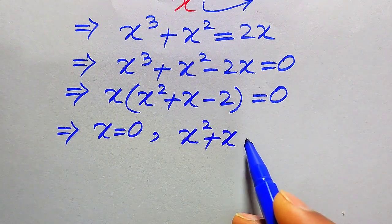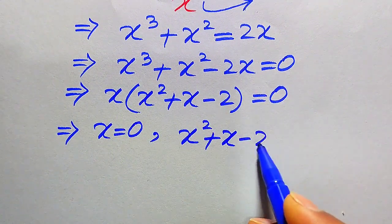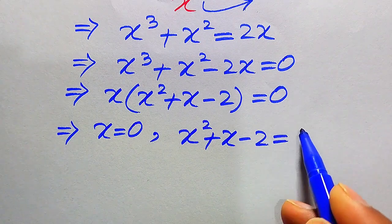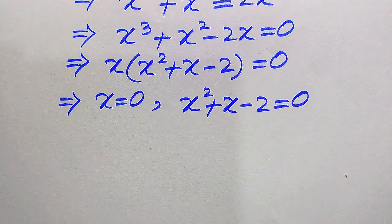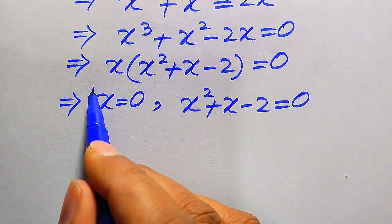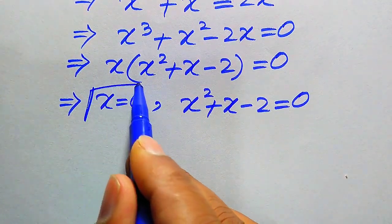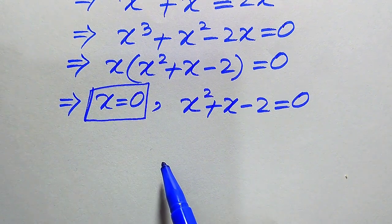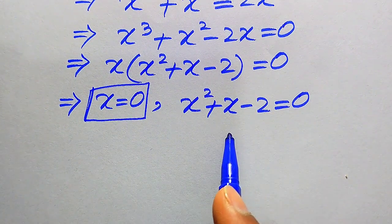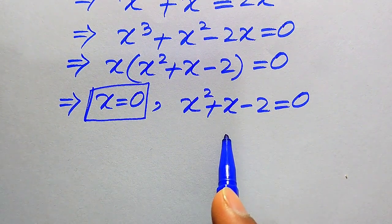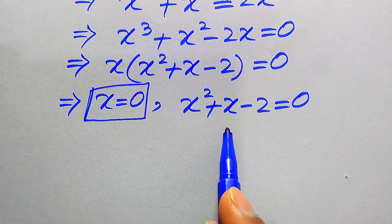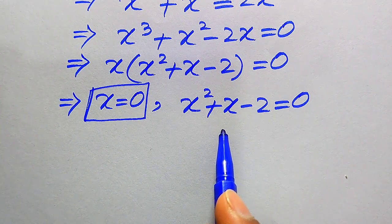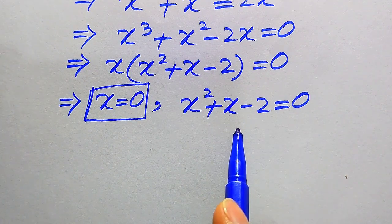So x = 0 is the first root of the given equation. In order to find the other roots we need to solve this quadratic equation. There are three methods to solve a quadratic equation: factorization, completing the square, and applying the quadratic formula.